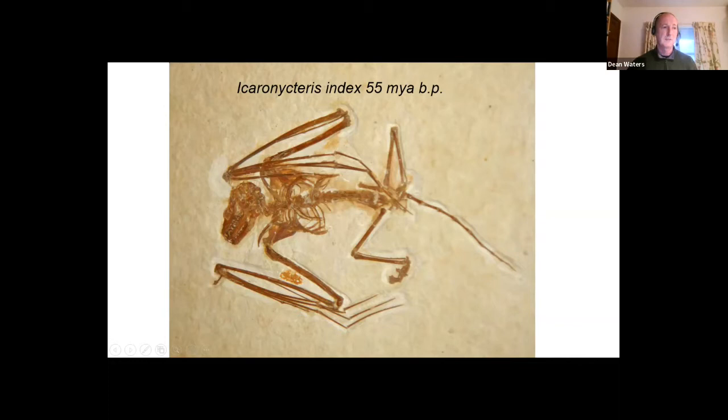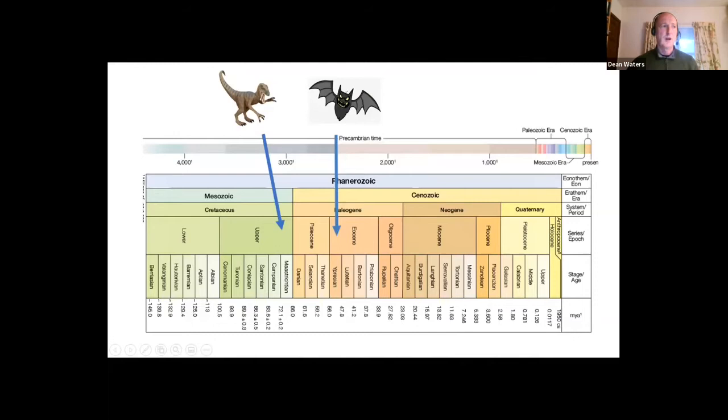This is a properly fully formed bat 55 million years ago. If we look at the timeline of bat evolution, this is Velociraptor at the top, a typical dinosaur just before the Chicxulub mass extinction event when the huge asteroid collided with the Yucatan Peninsula, wiped out most of the dinosaurs. Yet a few million years later we've got these fully formed bats appearing in the fossil record.